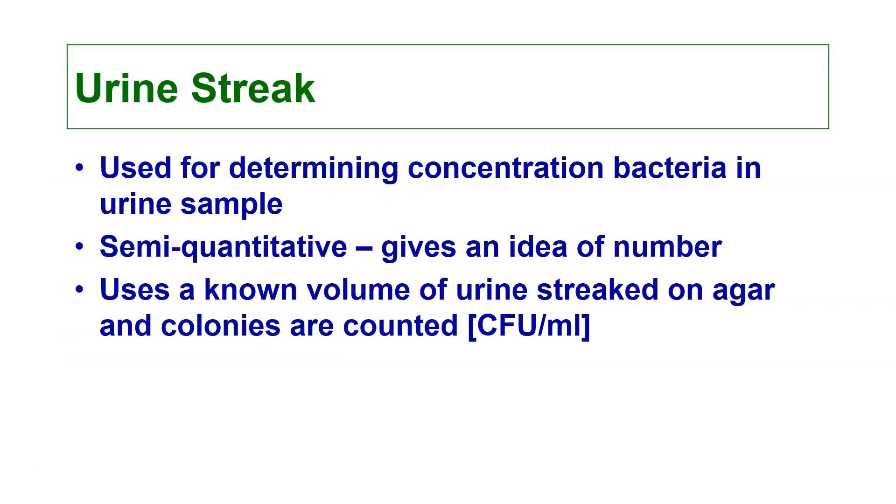The urine streak is used for determining the concentration of bacteria in a urine sample to know if someone has a urinary tract infection. This gives us a number. It is semi-quantitative and allows us to determine approximate CFU, or colony forming units, that are inside of the liquid medium.